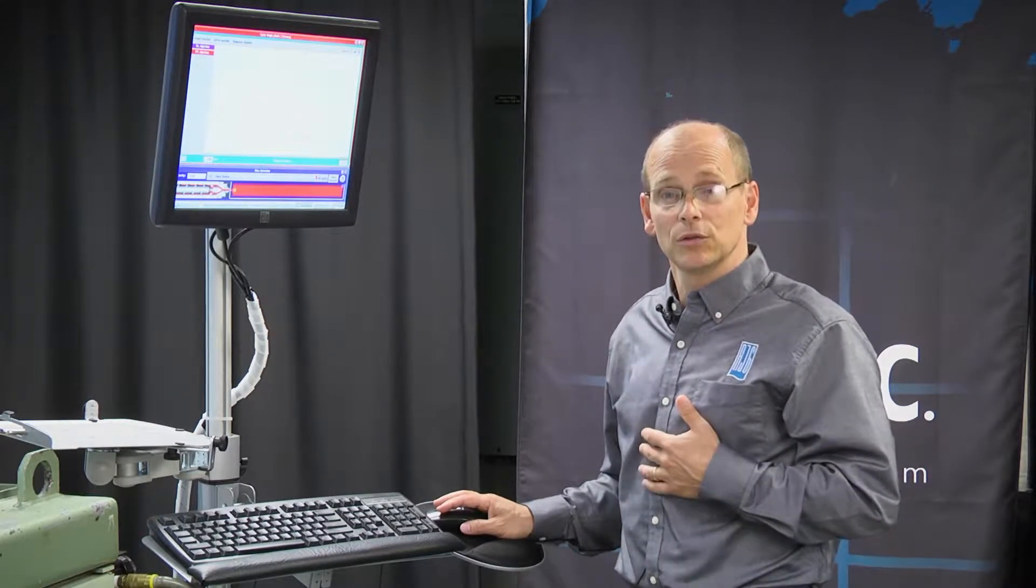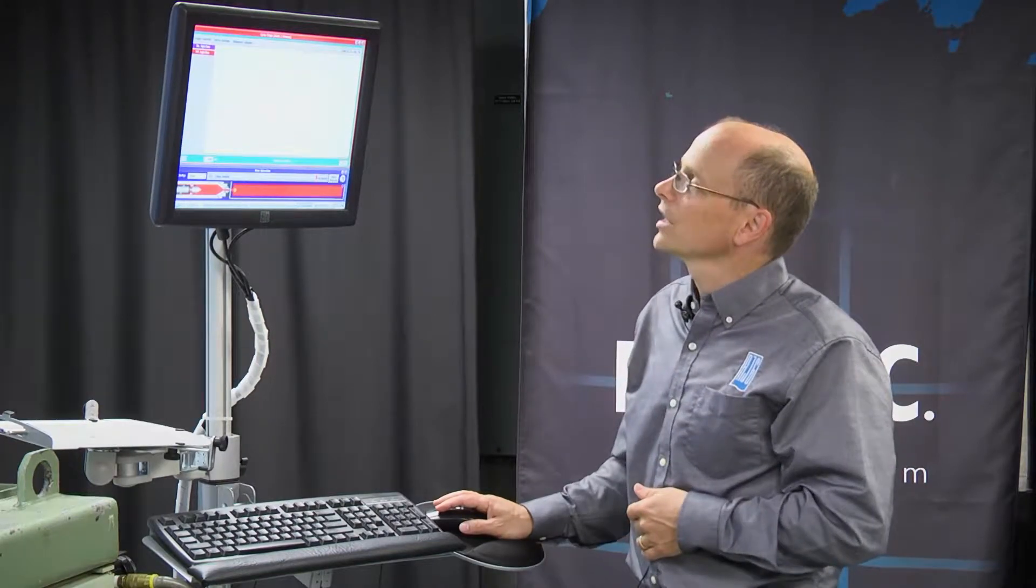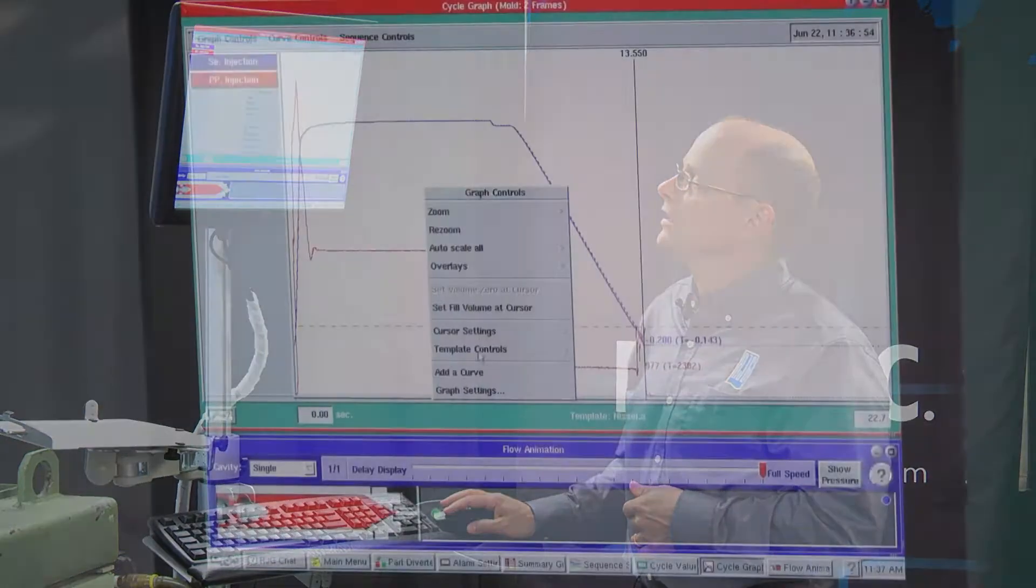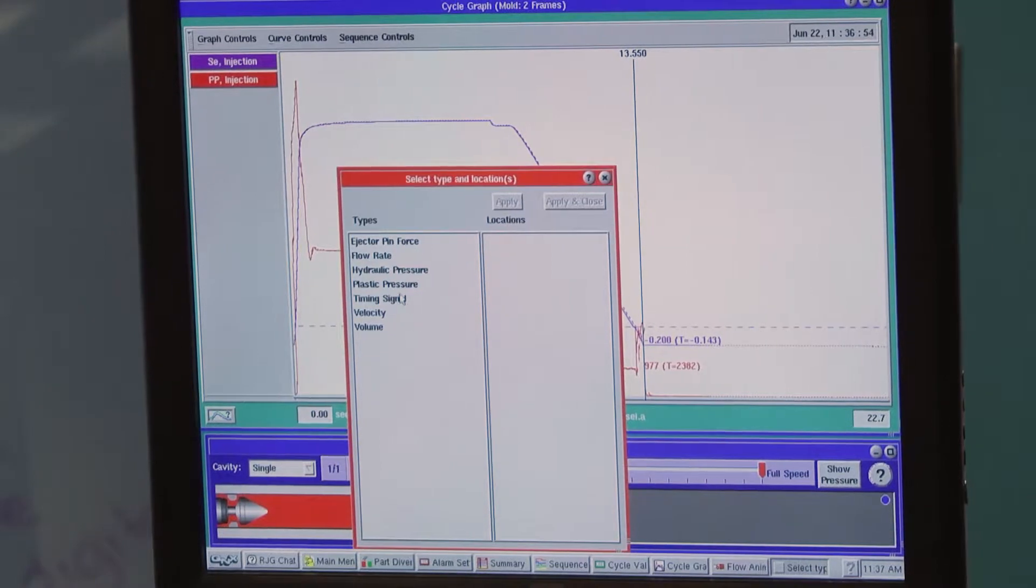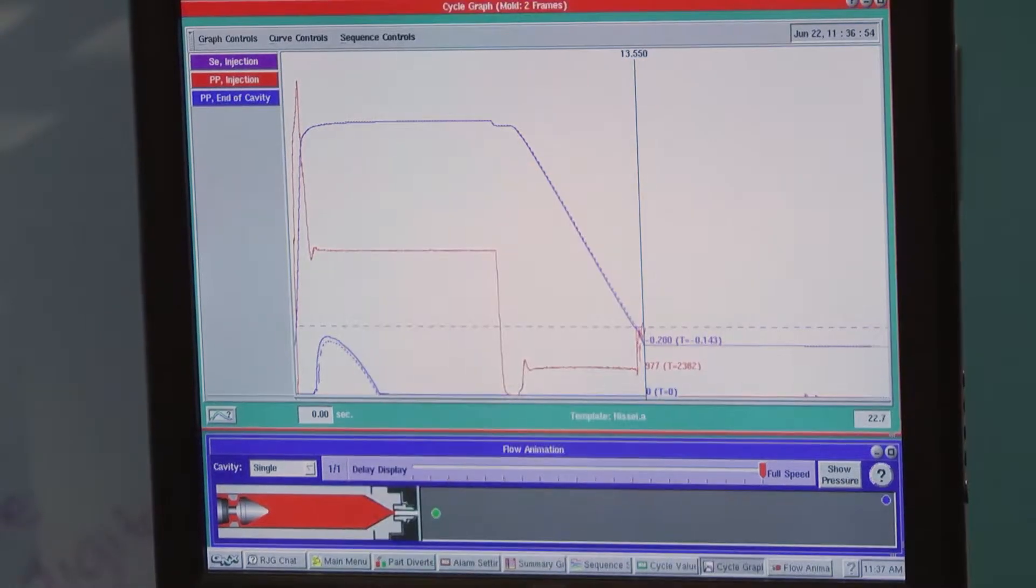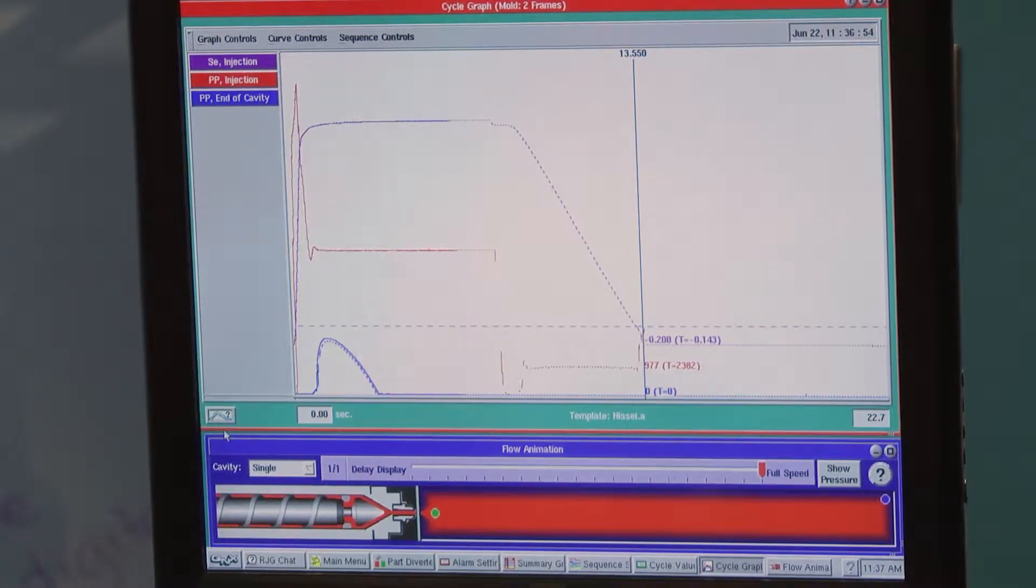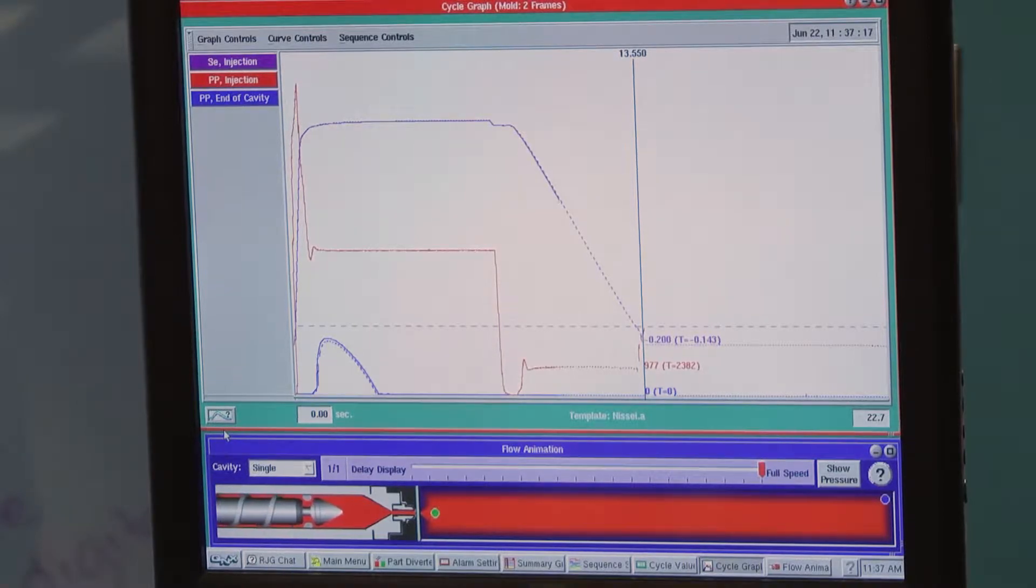The next thing we're going to look at is what's happening inside the cavity. So let's go ahead and add in a curve. We're going to start with the end of cavity curve because this curve really shows us the most about what's happening in terms of what's related to part quality. This curve tends to correlate very highly with part quality.